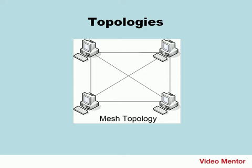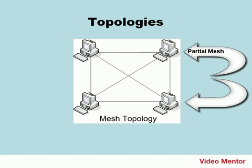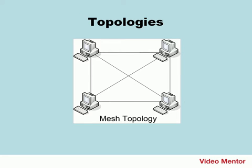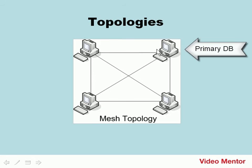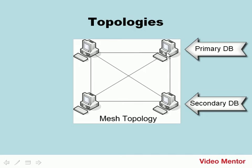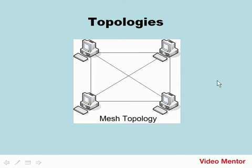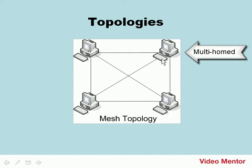A lesser version of this topology is the partial mesh, where only a few of the computers on the network have secondary network connections to other systems. You may see this with database replication — for example, a dedicated wired connection between a primary and secondary database server to facilitate fast transmission. Those computers would then be known as multi-homed systems because they'd have more than one connection.